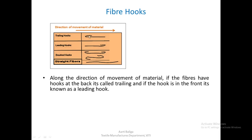There are different types of fiber hooks. If the material is moving in a certain direction and the fiber has a hook at the back, it is called a trailing hook. If the hook is in the front, it is called a leading hook. There may also be fibers with hooks on both sides, called double hooks, and some straight fibers with no hooks. If a hook were opened out, the straightened fiber would be longer than the hooked fiber.